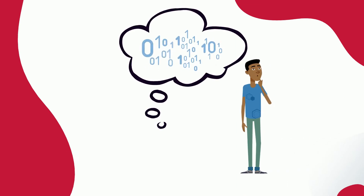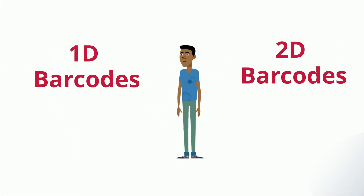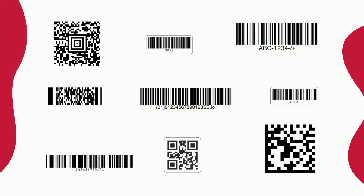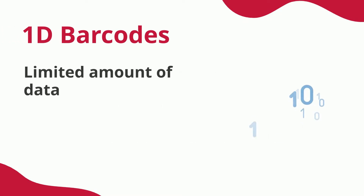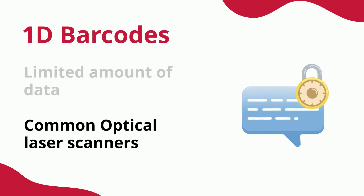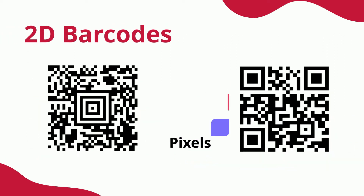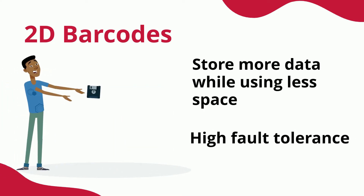Depending on how much data you want to store in your barcodes and how much space is available for applying them, both 1D and 2D barcodes have their advantages. In this video we cover some of the most widely used symbologies. 1D barcodes can only hold a very limited amount of data, but since inexpensive optical laser scanners can detect 1D codes, they are widely used in different industries. Alternatively, 2D barcodes consist of a grid of pixels that can store more data while using less space and have a high fault tolerance.